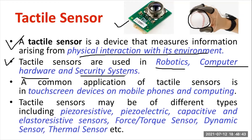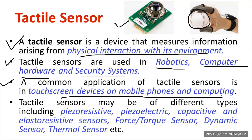Some places use tactile sensors for biometrics. Some IT companies implement them for entry control — only the particular concerned person of the organization can enter. Other than that particular person, it's not possible to enter. As soon as you enter, you are supposed to apply your thumb impression. That is also one of the applications of the tactile sensor. A common application is the touchscreen in your device, mobile phone, and computing applications.